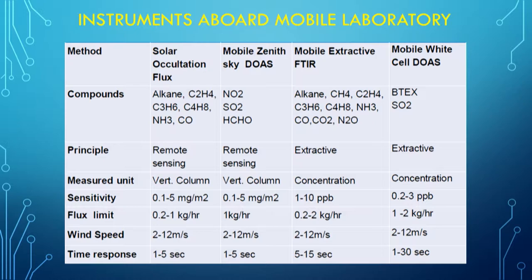We have a Solar Occultation Flux and the mobile DOAS Skydose instruments, which are both optical remote sensing instruments. The Solar Occultation Flux works in the infrared and is a direct sunlight measurement, while the mobile DOAS Skydose works in the UV-visible and collects scattered sunlight. There is absorption of specific compounds that can be measured by these two techniques.